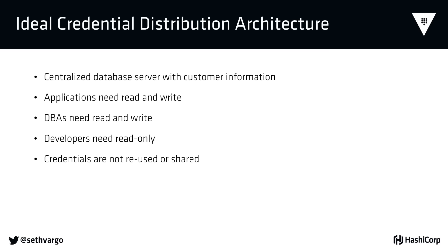The same is true for humans. Each developer should have their own credential so that if a developer leaves the company, their credential is revoked without impacting everyone else on the team. Credentials should not be shared between humans and machines. Unlike traditional passwords that are valid for a long time, credentials should expire after a period of inactivity. One of the core principles of Vault is that everything has a lifetime—a TTL. Unlike creating a password and storing it in a plain text file forever, credentials generated with Vault actually have a lifetime.